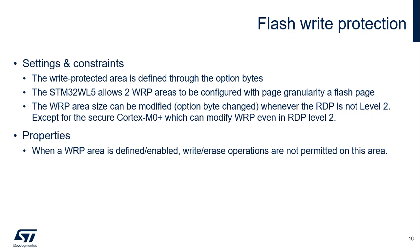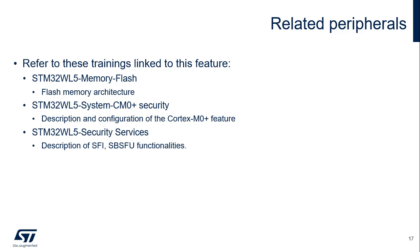Now let's take a closer look at the details of the write protection settings. The flash memory write protection mechanism is designed to prevent unwanted write access to defined areas in flash memory, such as secure boot, secure firmware update, or calibration constants that do not change. The write protection areas are defined through the option bytes. The user can define up to two different write-protected flash memory areas independently, each defined by a start and end address with a flash page granularity. The size of the write areas can be modified whenever the RDP level is not set to Level 2, except for the secure Cortex-M0+, which can still modify the WRP even in RDP Level 2. Erase operations are treated as write operations on write-protected areas, meaning they are not allowed. In addition to this training, you may find these three modules useful.